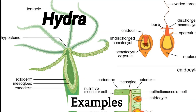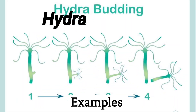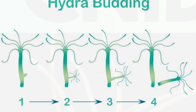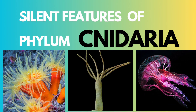Hydra (Class Hydrozoa): Hydras are small, freshwater Cnidarians that primarily exist in the polyp form. They are known for their regenerative abilities. These are some of the key characteristics and examples of organisms within the phylum Cnidaria.